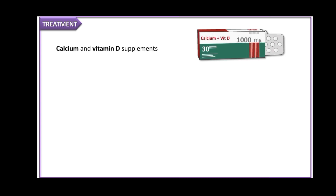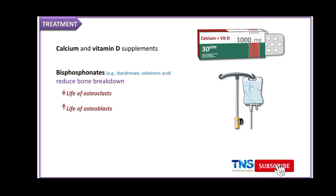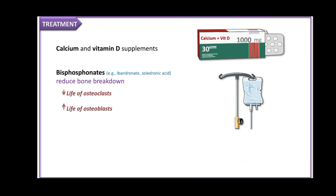For treatment, calcium and vitamin D supplements are used. The first-line drugs for osteoporosis are bisphosphonates, such as ibandronate and zoledronic acid. These drugs reduce bone breakdown by shortening the life of osteoclasts and prolonging the life of osteoblasts. One of the main side effects of bisphosphonates is flu-like symptoms.